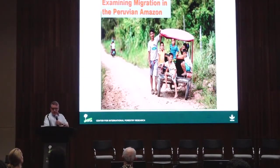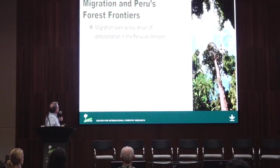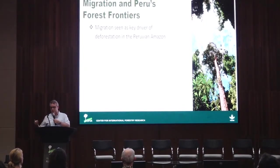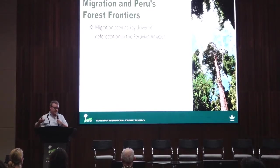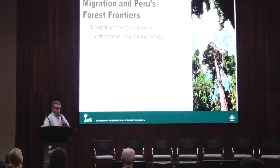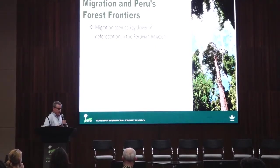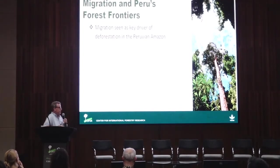I'm going to focus specifically on a case funded by the German BMZ in the Peruvian Amazon. Migration is seen as a key driver of deforestation there, and you often see it cited. The government will release documents claiming things like 90% of deforestation in the Amazon is caused by migratory agriculture, but they're always quite vague about what they mean — migratory agriculture could mean swidden agriculture, and they're not specific about where they get this information.